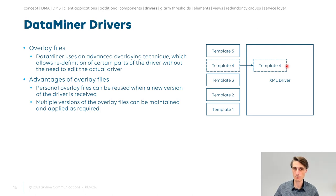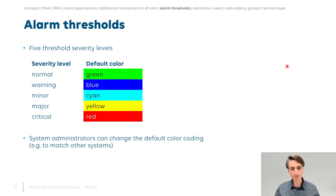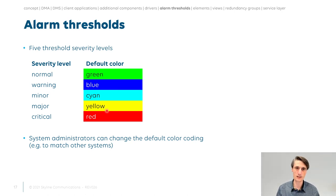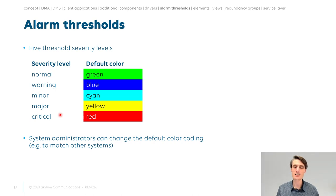When data is in the DataMiner system and hosted in elements, it can generate alarms. The alarm levels available are: normal (no alarm), warning, minor, major, and critical. The default colors are cyan, yellow, orange, and red. Note that the administrator can change these colors in a config file. You don't have to use all levels — if you're not interested in minor alarms, simply don't configure any thresholds for that level.